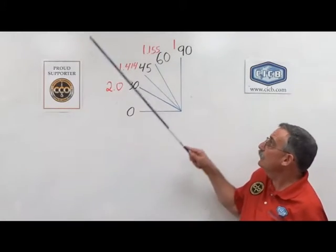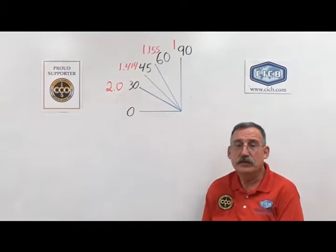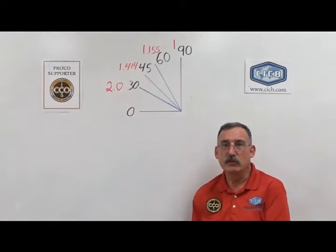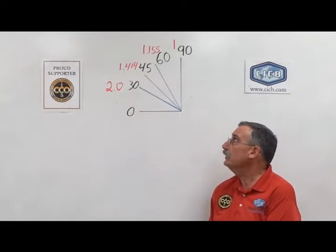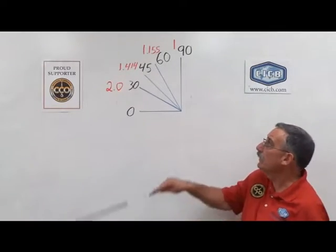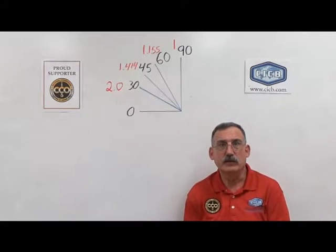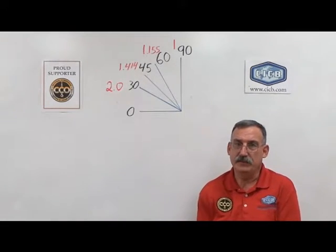If our sling is between a 60 and a 45, we're going to use the factor for the 45 degree angle, or 1.414. When our sling is between a 45 and a 30, we are going to use a sling angle factor for a 30 degree, or 2. We need to memorize these numbers.